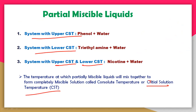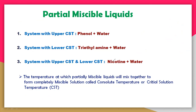The Critical Solution Temperature is the temperature at which partially miscible liquids will mix together to form a completely miscible solution. So a partial miscible liquid A and B, at a certain temperature, can convert into a fully miscible solution.